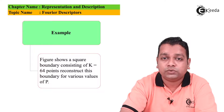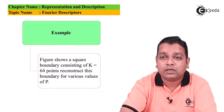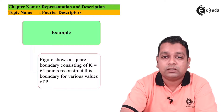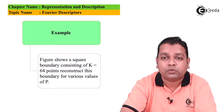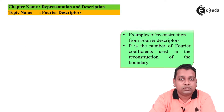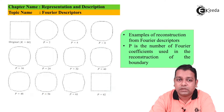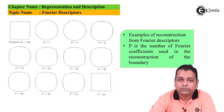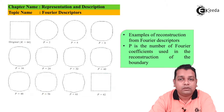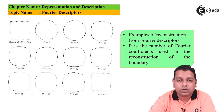The figure in this example shows a square boundary consisting of K = 64 points, and we reconstruct this boundary for various values of P. P is the number of Fourier coefficients used in the reconstruction of the boundary. Starting at the top left with the original boundary at K = 64, we proceed with P = 2, then P = 4, P = 8, P = 16, P = 24, P = 32.